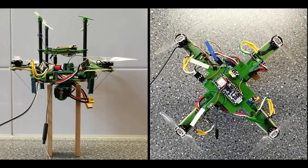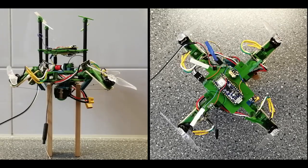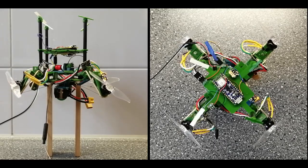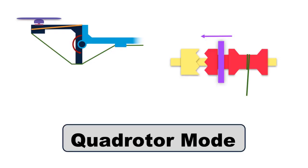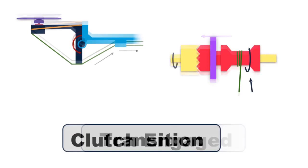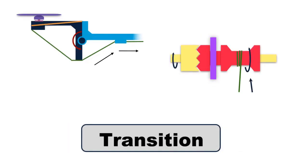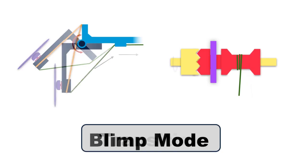The system allows for recovery from an erroneous failure detection. This can be done by transitioning back into blimp mode from quadrotor mode while the balloon is still intact. The linear servo engages the clutch where the DC wind-up motor pulls the reel. This pulls on the motor arm, adding tension to the fishing line, ultimately pulling the motor arm down back into blimp mode.